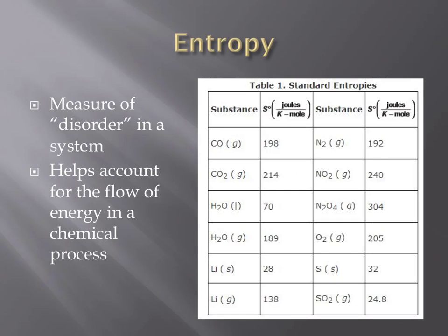Entropy can be defined as a measure of disorder or chaos within a system. What entropy does is account for the flow of energy in a chemical process. Like enthalpy, values for entropy would be found in some online resource or in a chemistry or biology textbook. You would not ever be expected to determine or calculate these on your own.